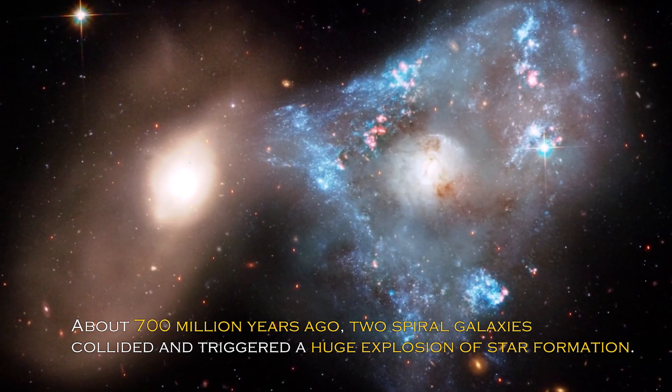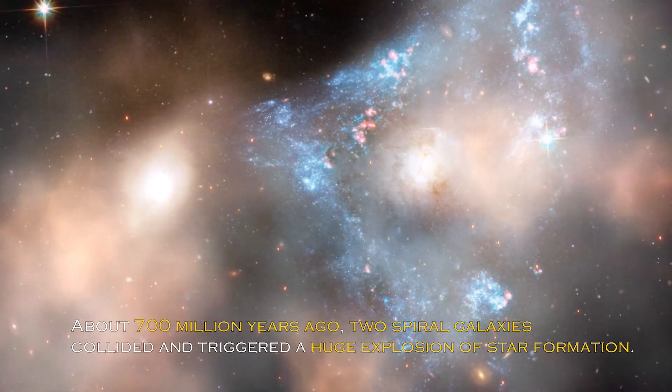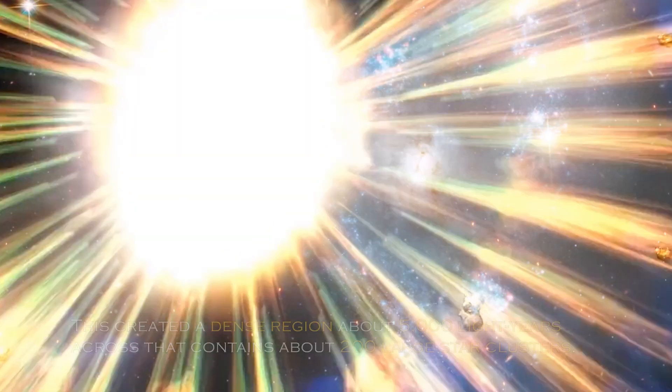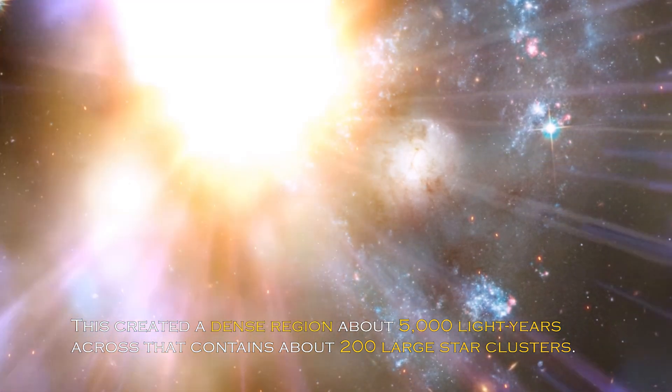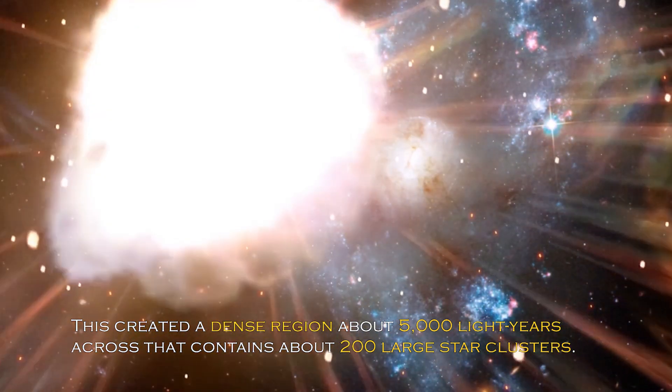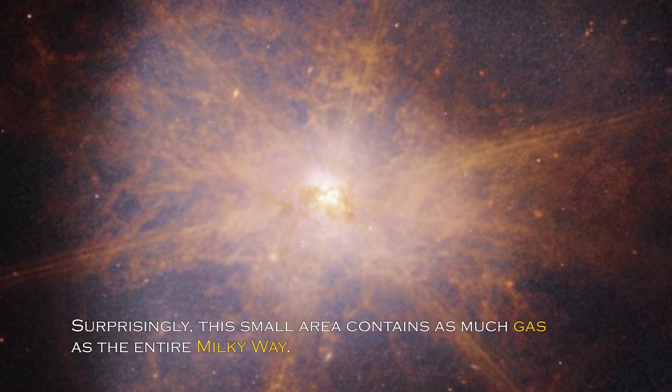About 700 million years ago, two spiral galaxies collided and triggered a huge explosion of star formation. This created a dense region about 5,000 light-years across, that contains about 200 large star clusters. Surprisingly, this small area contains as much gas as the entire Milky Way.